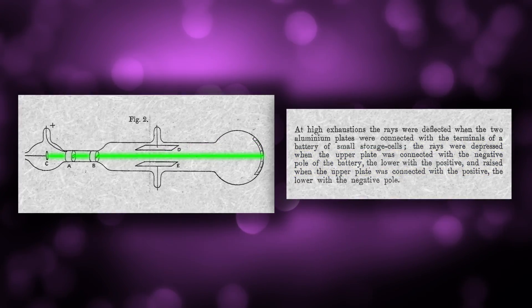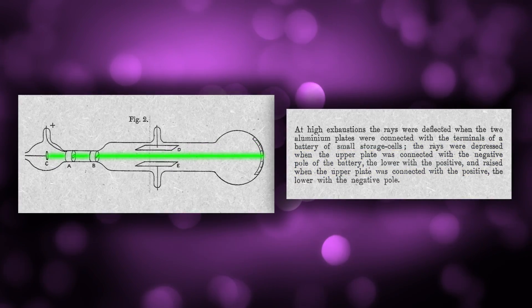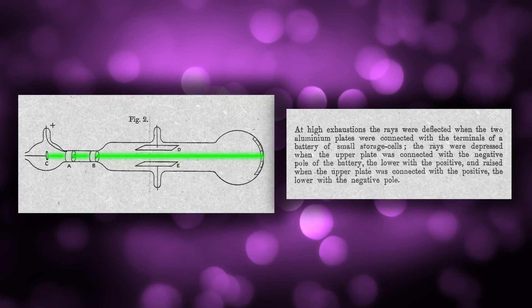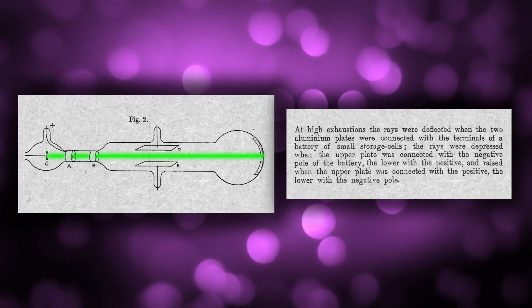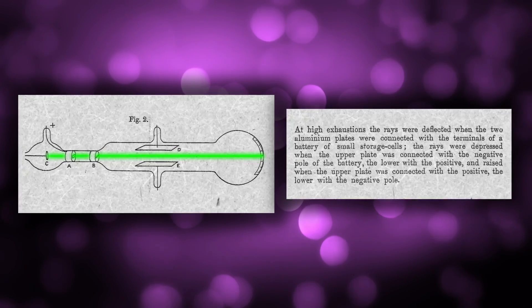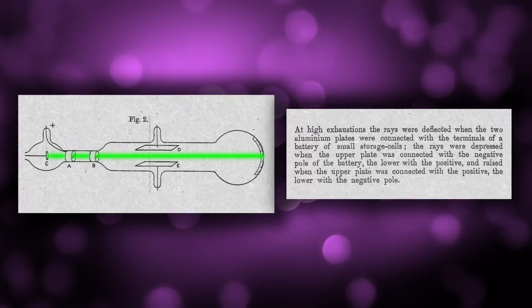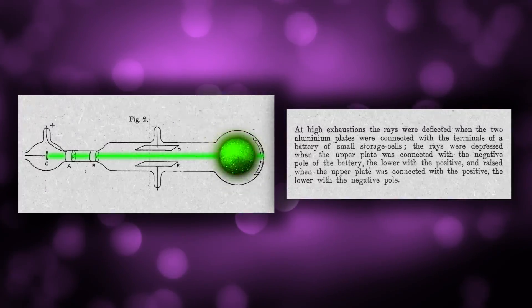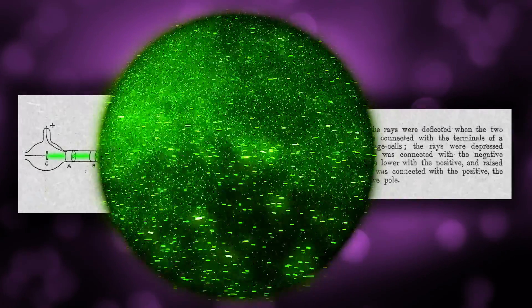Thompson demonstrated for the first time that cathode rays could be deflected by an electric field. And not only that, with similar experiments, he was able to show that these deflected rays could charge up the electrodes that they landed on. Thus, he was able to confirm that they consisted of electrically charged particles.